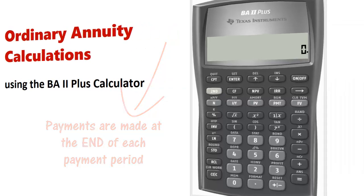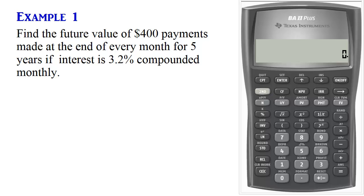Let's look at a few examples. Example 1: Find the future value of $400 payments made at the end of every month for 5 years, if interest is 3.2% compounded monthly.